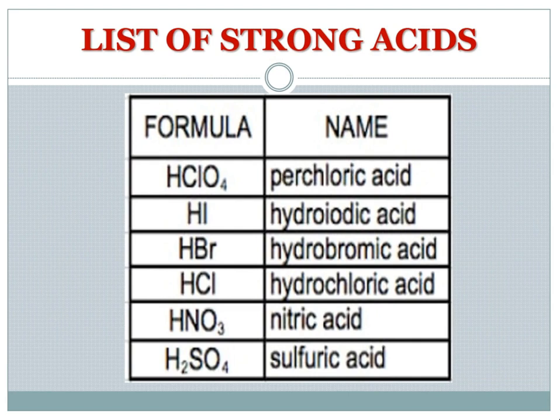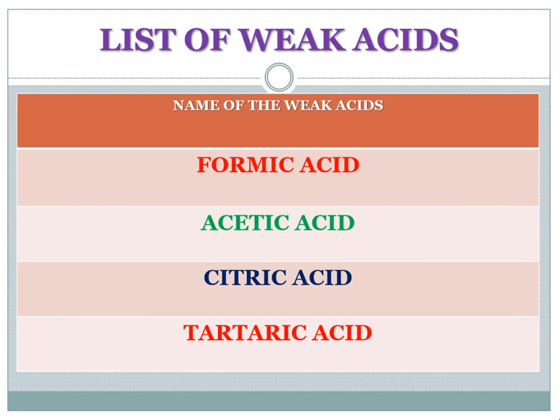The list of strong acids includes: HClO₄ (perchloric acid), HI (hydroiodic acid), HBr (hydrobromic acid), HCl (hydrochloric acid), HNO₃ (nitric acid), and H₂SO₄ (sulfuric acid). The list of weak acids includes: formic acid, acetic acid, and tartaric acid. Take snapshots of both lists as they are important for exams.